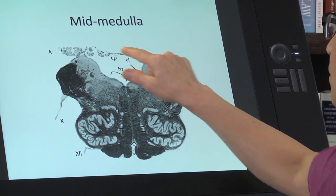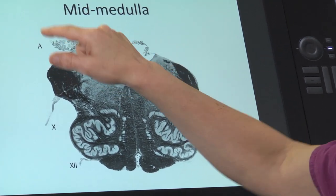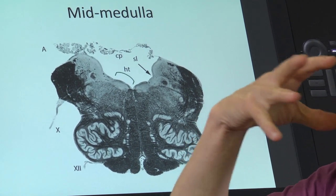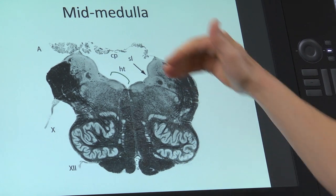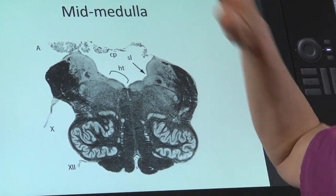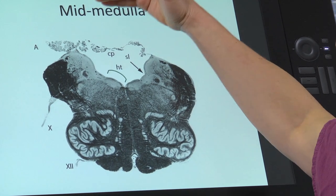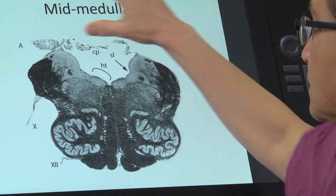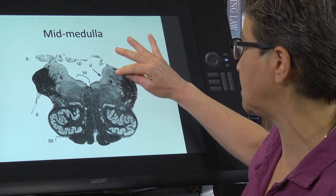Up here is this cruddy-looking stuff — that's choroid plexus. Remember there's choroid plexus in the fourth ventricle, and above this would be the fold of the cerebellum. So the cerebellum is lying over here, but it's not connected to the medulla.